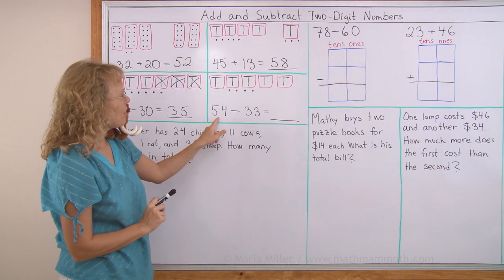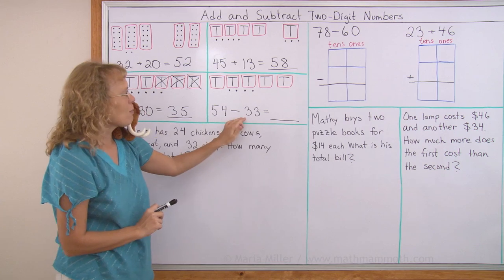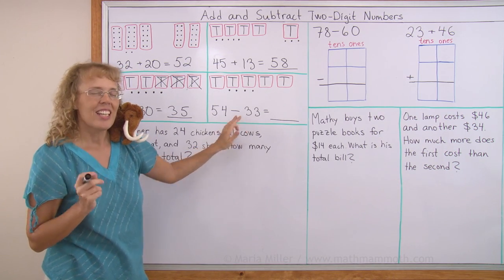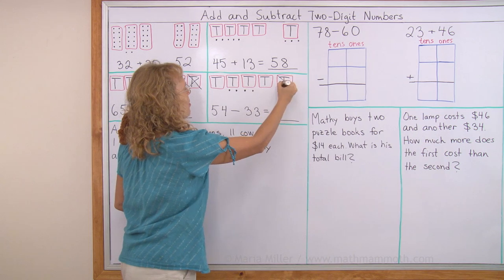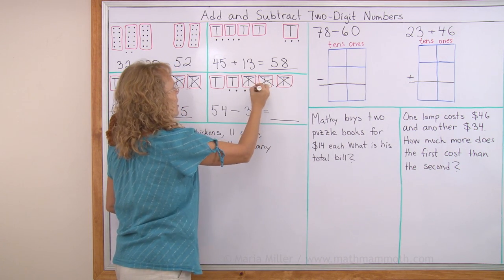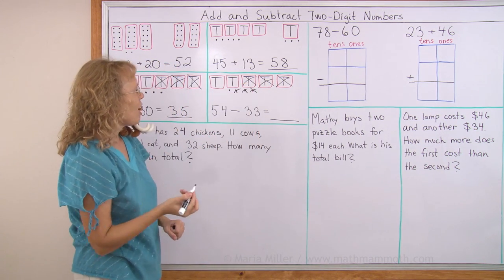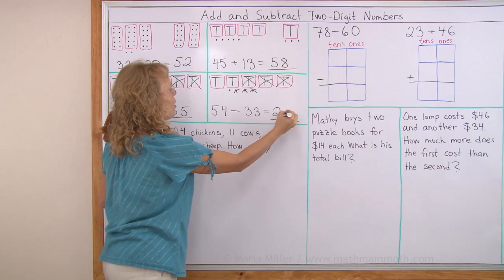Now this one, I have 54 here in the model. I'm going to take away 33. That means taking away three tens and three little dots. So now what I have left is two tens and one.